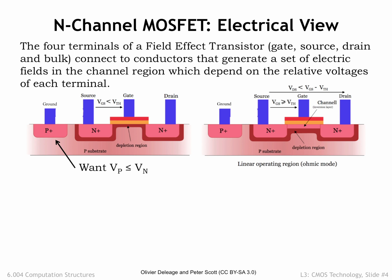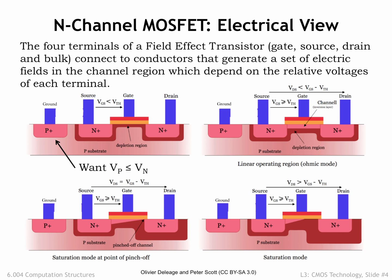The story gets a bit more complicated when VDS is larger than VGS, as shown in the bottom figures. A large VDS changes the geometry of the electrical fields in the channel, and the inversion layer pinches off at the end of the channel near the drain. But with a large VDS, the electrons will tunnel across the pinch-off point to reach the conducting inversion layer still present next to the source terminal. How does pinch-off affect IDS, the current flowing from drain to source?